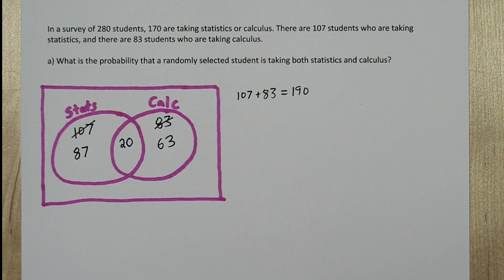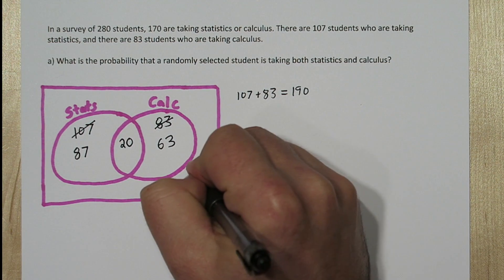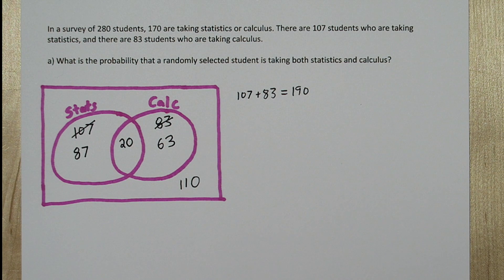And each of the bubbles adds up to the right number as well. We're also told that the survey had 280 students in it. Since inside our bubbles we only have 170 accounted for, that means there's 110 students who aren't taking stats or calculus.